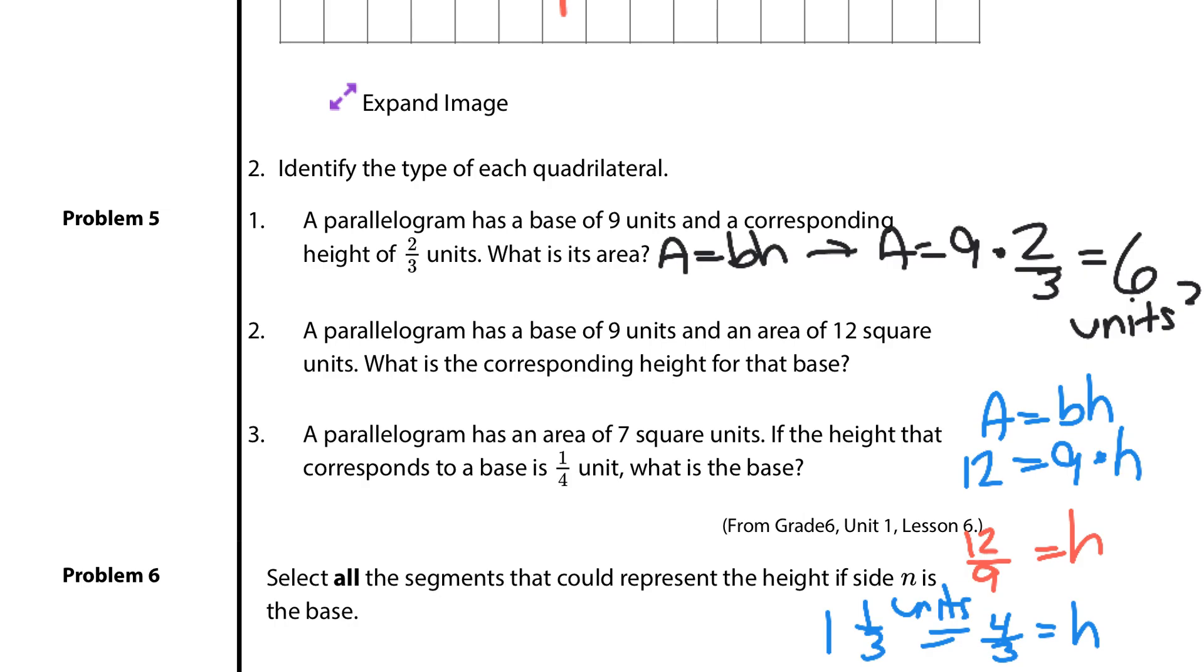A parallelogram has an area of seven square units. If the height that corresponds to the base is one-fourth unit, what's the base? This area is still going to equal base times height. And so our area is seven. Our base is b, I don't know, and the height is one-fourth. Well, a fourth of the base is equal to seven. So if I were to take seven times four, I would get 28 equals my base. So 28 units.